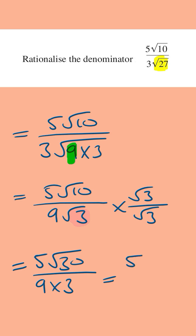Simplifying this, this is equal to 5 root 30 over 27. And this fraction can't be simplified any further, and so this is your answer.